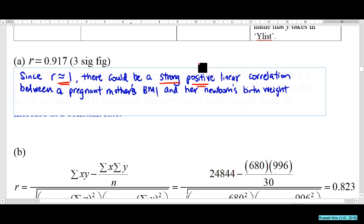You should say 'linear' because r measures the strength of the linear relationship only. r cannot measure quadratic or other non-linear relationships. So you must state these three things: strong (close to 1 or -1), positive (close to 1, not -1), and linear (because r is the linear product moment correlation coefficient).